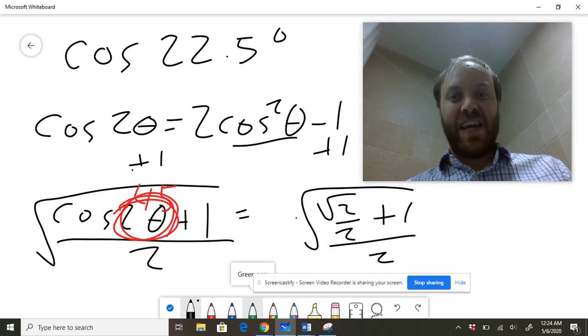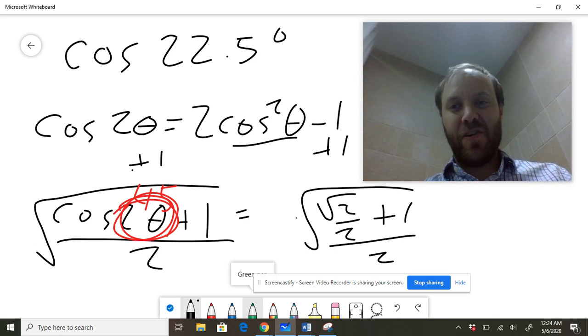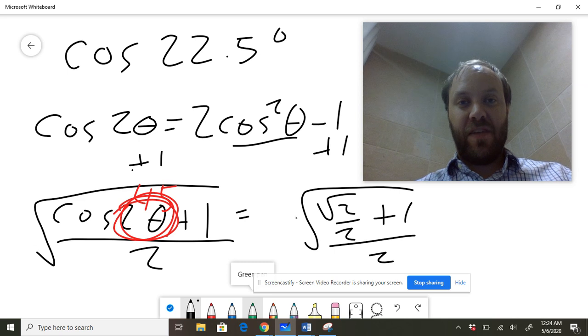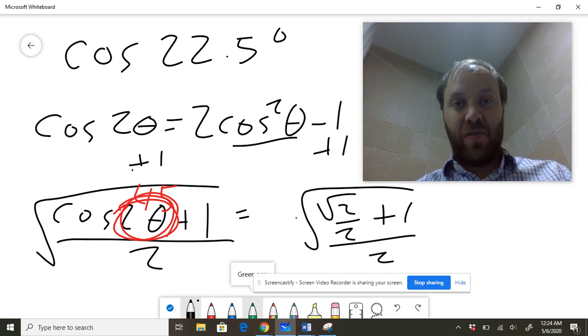So did I say it would be neat and tidy? No. Could that be simplified into some different forms? Probably. But again, if you were just trying to come up with a way to get an exact value for cosine of 22.5, that's how you could do it.